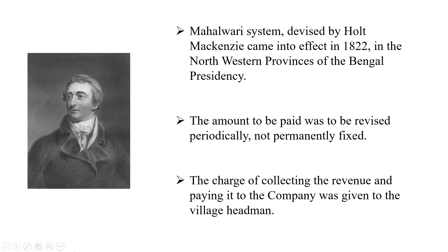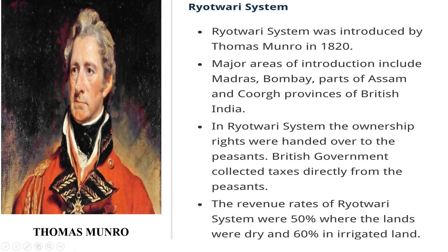Next came the Mahalwari system. The company was now in need of more money to meet its expenses of administration. Many of the company officials were convinced that the system of revenue had to be changed again. In 1822, a new land settlement was introduced on a temporary basis. It was introduced in the Gangetic Valley, North-West Provinces, Punjab, and parts of Central India. It was devised by Holt McKenzie, who felt that the village was an important unit in North Indian society which needed to be preserved. Under this system, a community unit named Mahal was constituted, created only for the purpose of revenue collection. The village headmen were held responsible for the collection of land revenue from their respective Mahals. In this system, land revenue was not fixed permanently, but was revised from time to time on the basis of the produce of a Mahal.